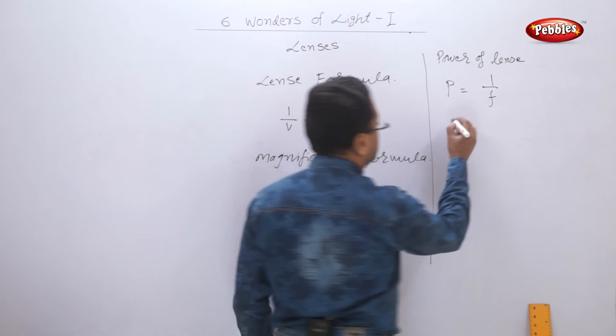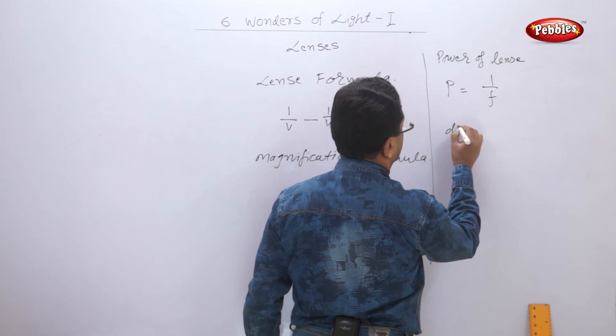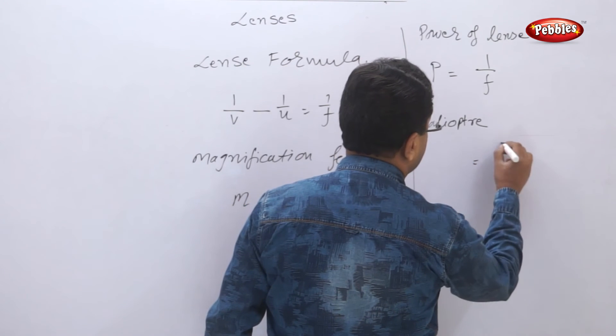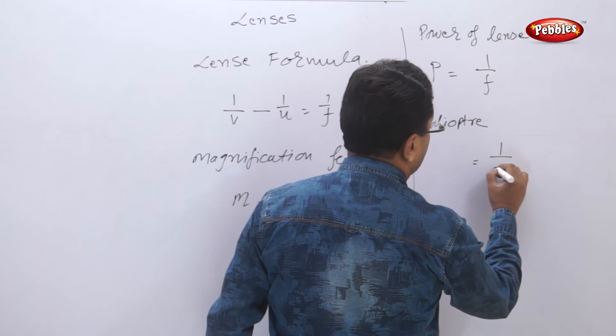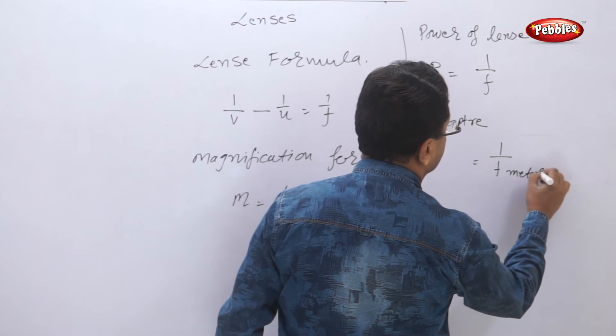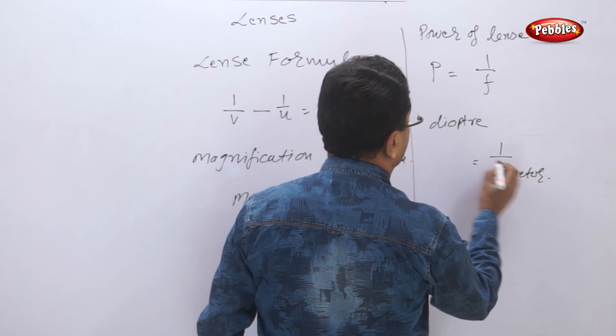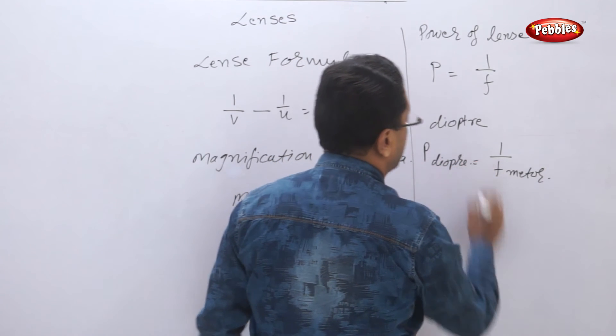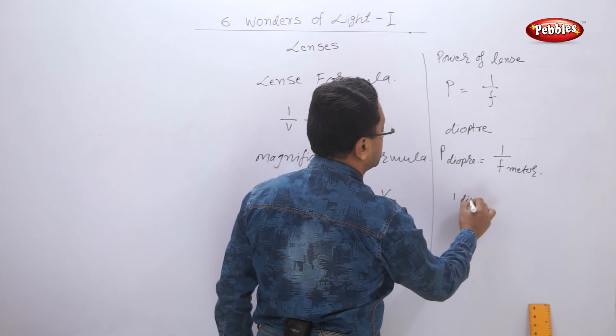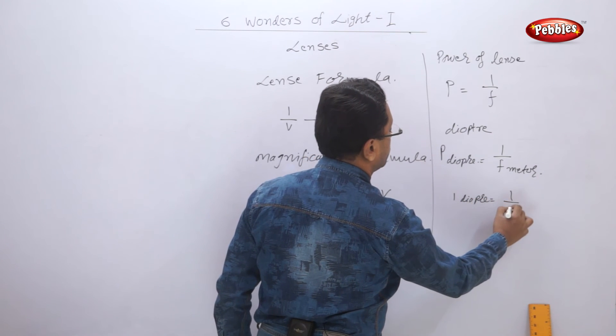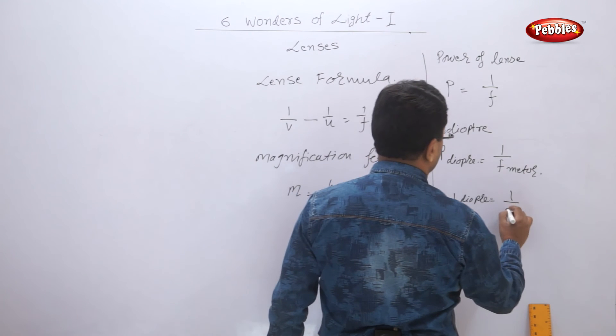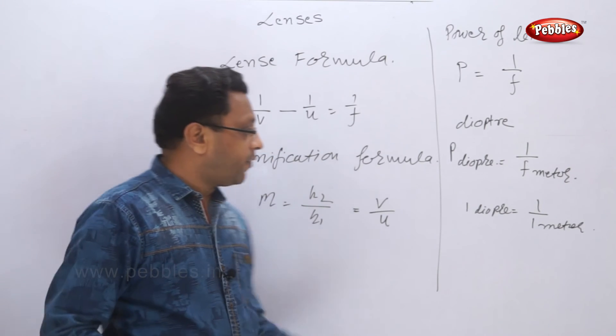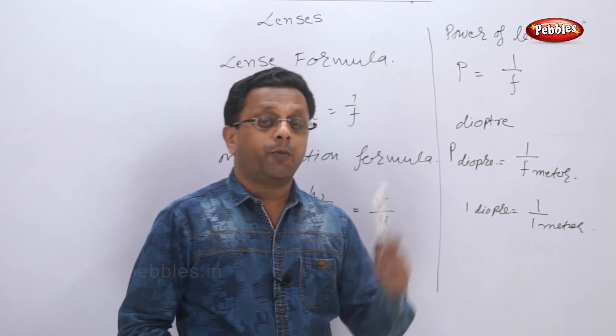If the focal length is expressed in meters, then the power of lens is expressed in diopter. One diopter is equal to one upon one meter. How will you define one diopter? One diopter is the power of a lens whose focal length is one meter.